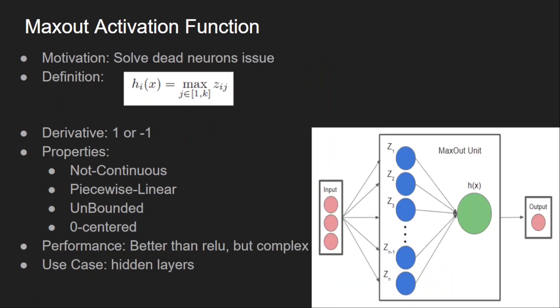The next function is the Maxout activation function, which is different from all the activation functions we have seen so far. The motivation came from solving the dying ReLU or dead neurons problem. It simply takes the maximum of all the pre-activations — whatever weighted sums we have, take the maximum of all those and pass it to the output. There won't be any zero in the output unless the maximum is zero, so there is no dead neuron issue. We can't define a simple derivative formula; it is 1 for positive values and -1 for negative values. It is a non-continuous, piecewise linear function that passes the input value directly to the output.